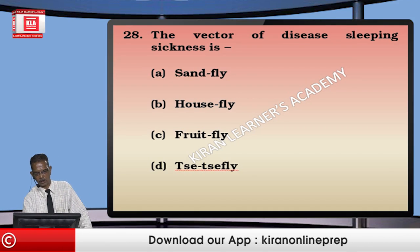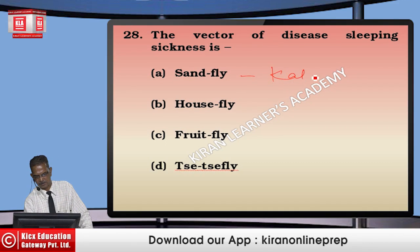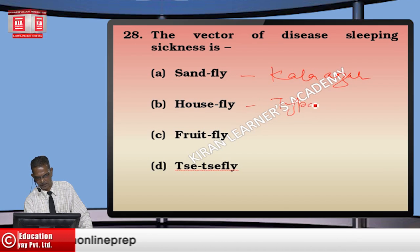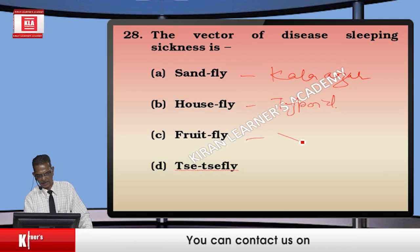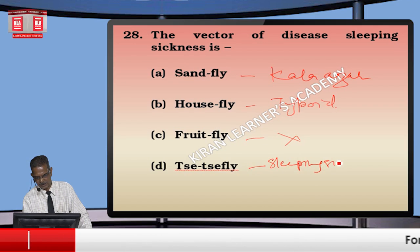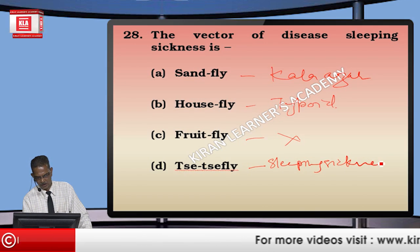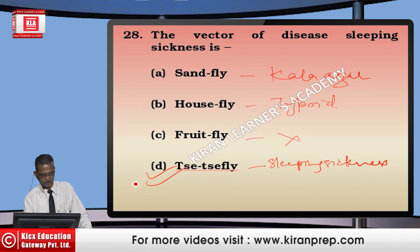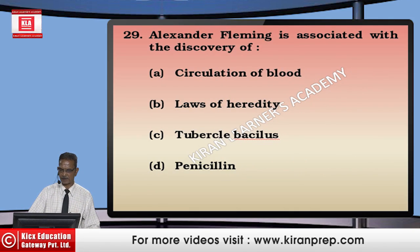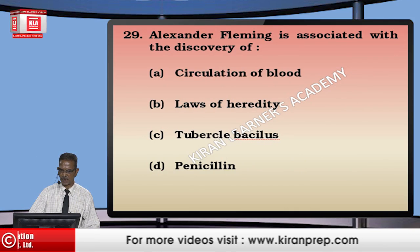The vector of sleeping sickness is the tsetse fly. Sand fly is the vector for kala-azar. House fly is associated with waterborne diseases like typhoid and cholera. Fruit fly is not a disease vector. So the tsetse fly is the correct option for sleeping sickness.